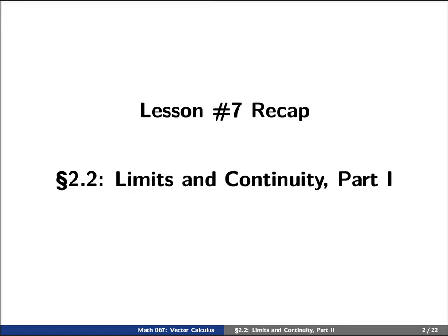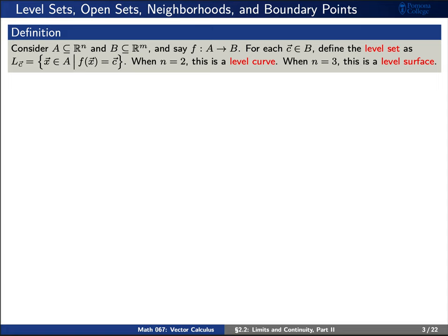First, I'd like to remind you about the definition of a level set. Let's consider a function f from a subset A inside of R^n to a subset B sitting inside of R^m. For each fixed vector c inside of our codomain B, we'll define the level set as the collection of vectors x in the domain A such that f(x) equals this fixed vector c. When n is equal to 2, this is a level curve, and when n is equal to 3, this is a level surface.